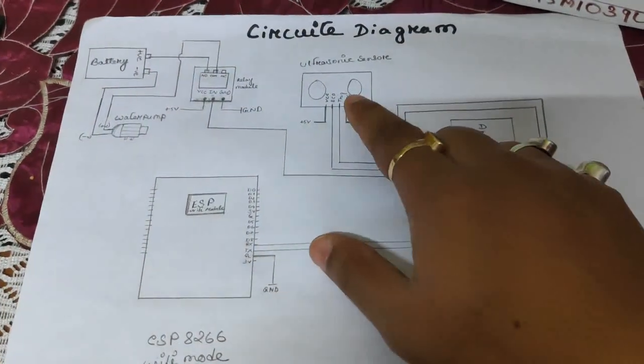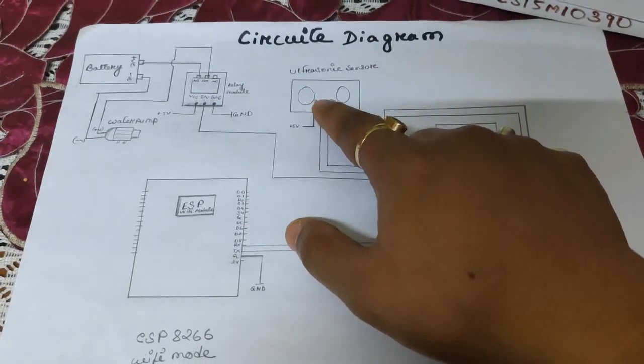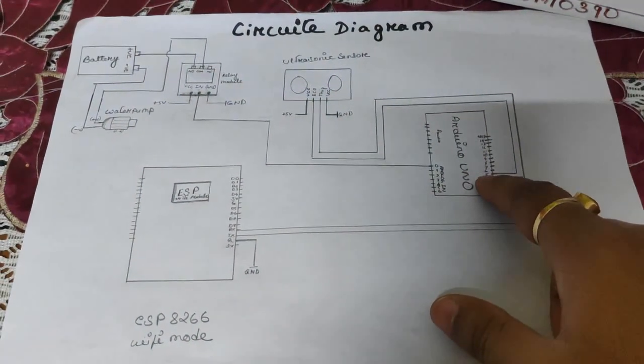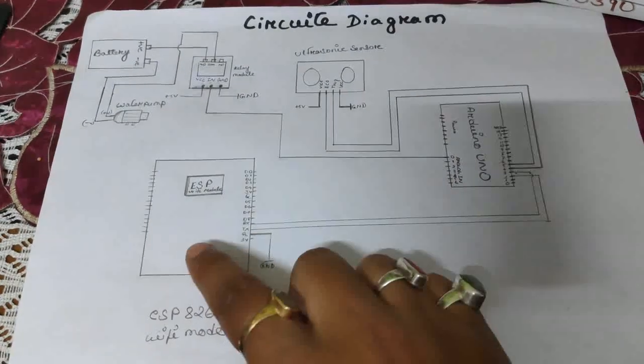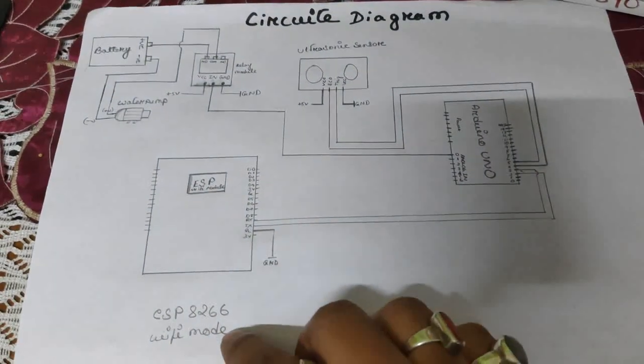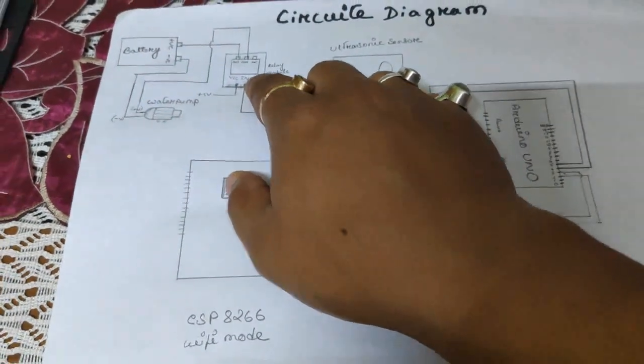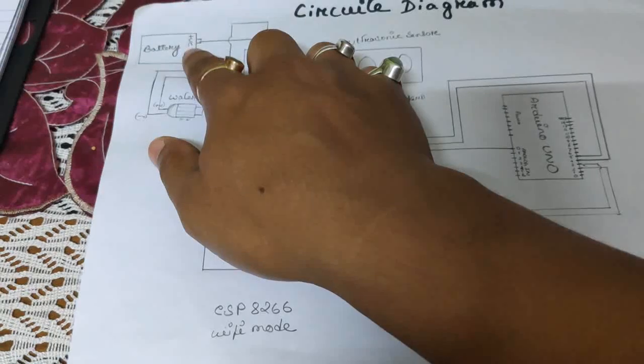First of all, this is the ultrasonic sensor. And this is the Arduino Uno. And this is ESP8266 wifi module. And this is relay. And this is water pump. And this is battery.